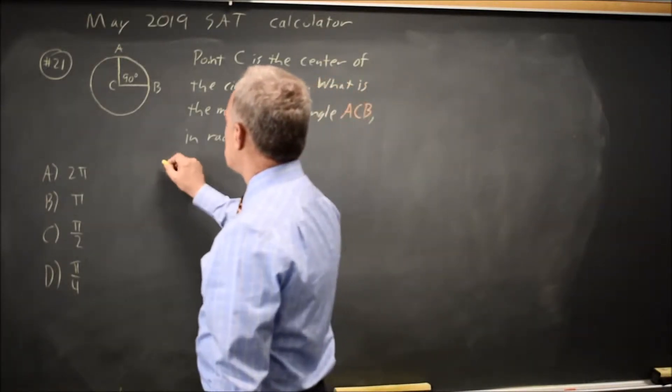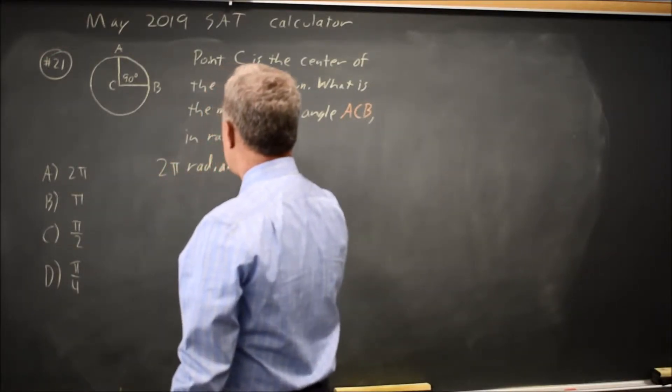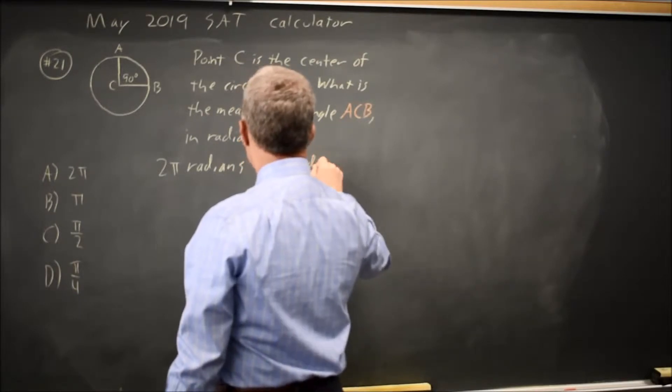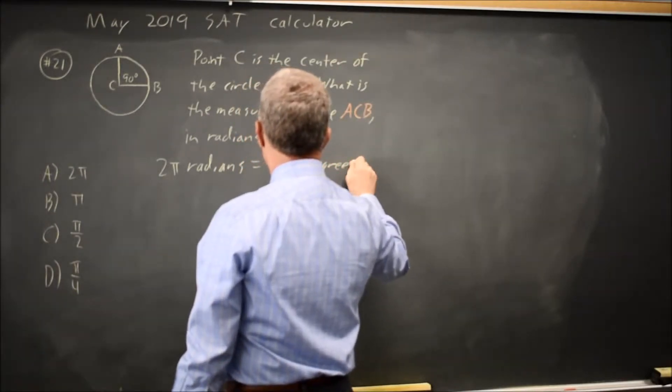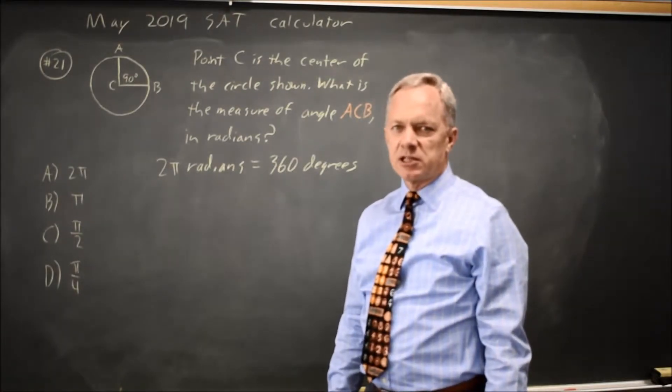If you recall, 2 pi radians equals 360 degrees. The formula sheet at the start of each SAT math section tells you this.